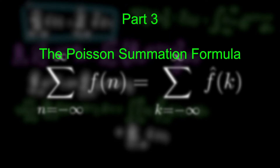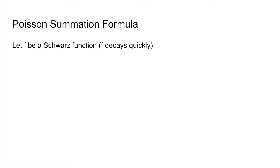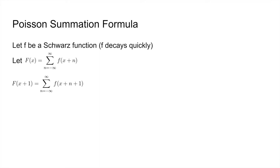We will now prove an important formula called the Poisson summation formula and apply it to the equation we just derived. Let f be a Schwarz function, which basically means that it decays rapidly. Let capital F of x be the sum over all integers n of f of x plus n. Note that capital F of x plus 1 is the sum over all integers n of f of x plus n plus 1, which is the same as capital F of x — we are just shifting the index by 1. Therefore capital F of x plus 1 equals capital F of x, so capital F is periodic.